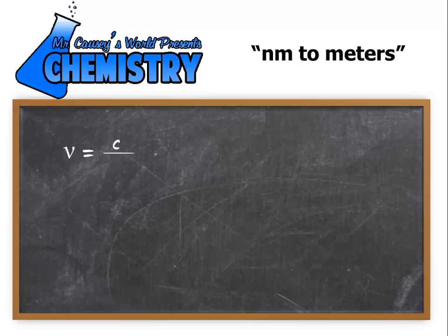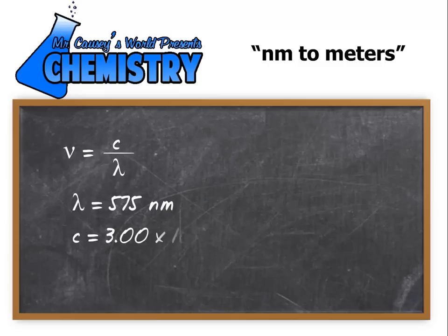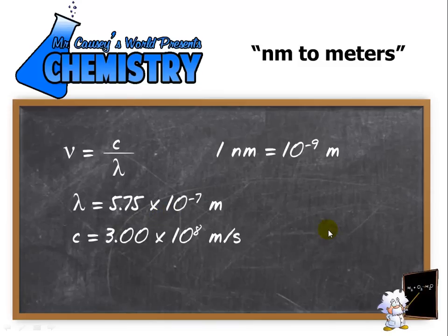And as we look our equation over and gather our information we realize here that 575 nanometers, nanometers here does not match with meters. So we know that 1 nanometer equals 10 to the negative 9 meters. That's right. There are a billion nanometers in a meter. If we use this as our conversion we can convert nanometers into meters. Let's fill in the equation.